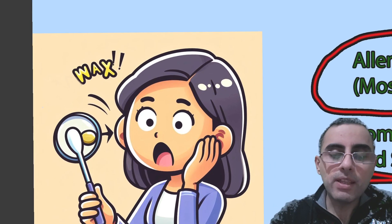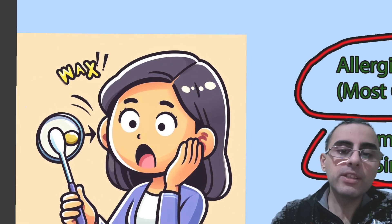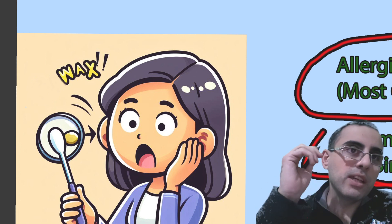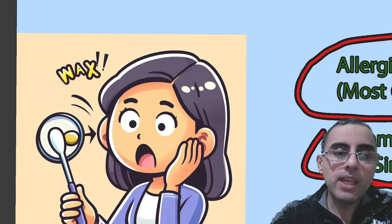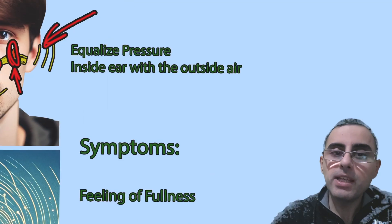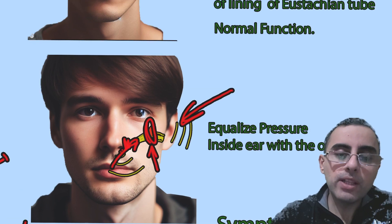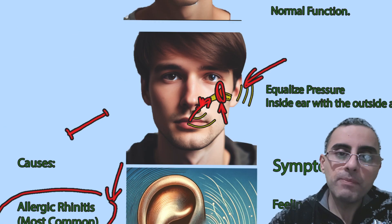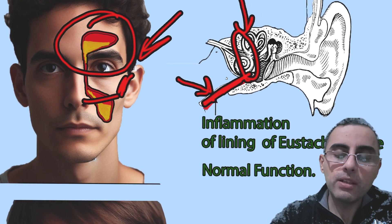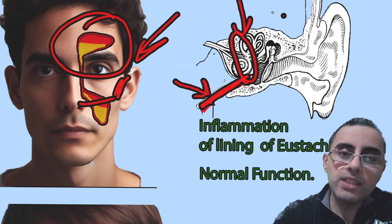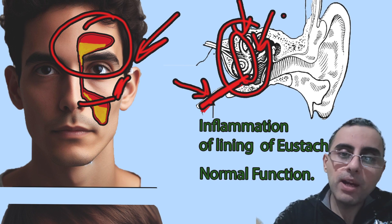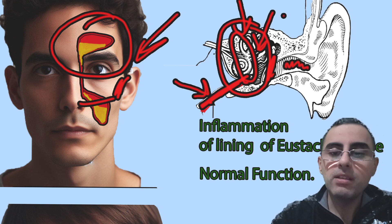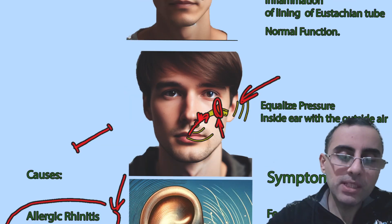Now let's address a common misconception: some people think that ear wax causes Eustachian tube dysfunction. This is not correct. Ear wax forms in the outer part of the ear, while Eustachian tube dysfunction is a process that happens in the middle ear — a totally different anatomical part. There is an eardrum separating them, so ear wax has no connection with this condition.